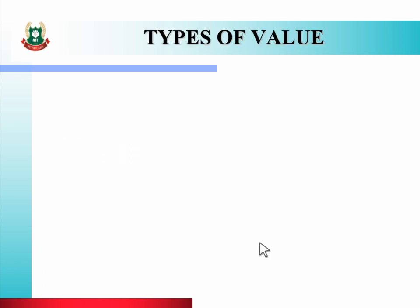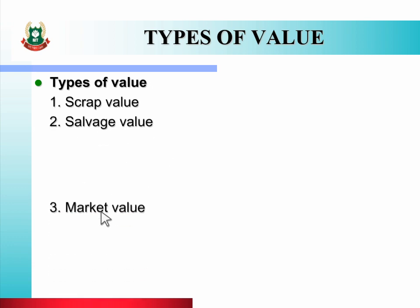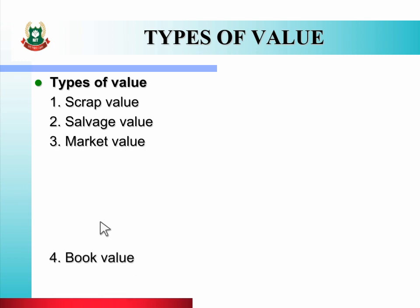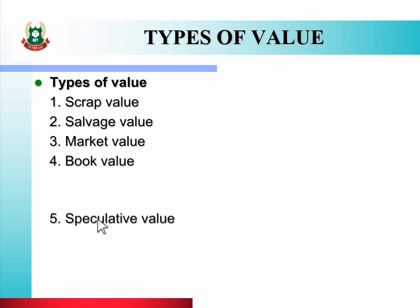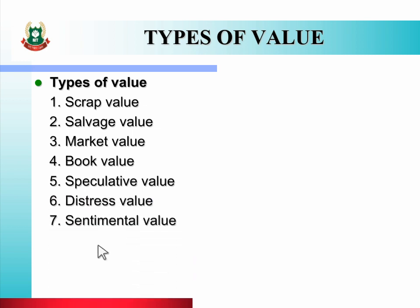Now we will see the types of values. These are: scrap value, salvage value, market value, book value, speculative value, distress value, sentimental value, and monopoly value. Let us see the definition of each.